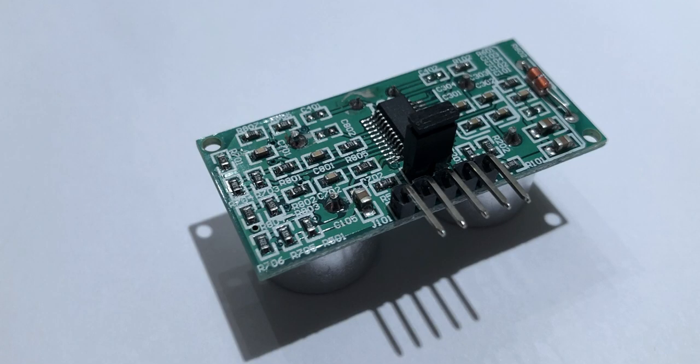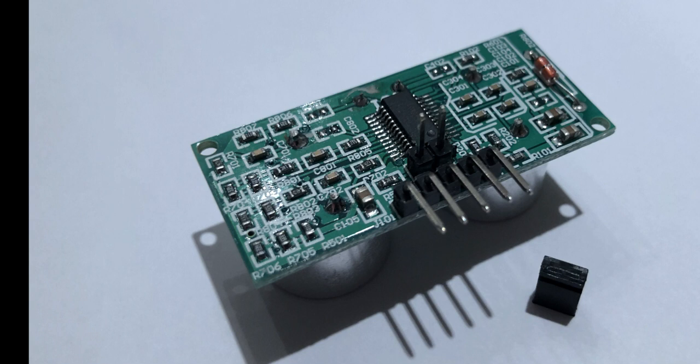So, if you leave the jumper in place, the US100 is in UART mode. And if we remove it, it's in manual mode.